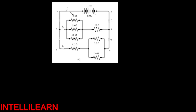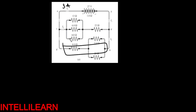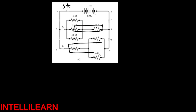So 27 divided by 9 is 3, meaning the current coming out is 3 Amperes. This is I1 = 3 Amperes, the current coming out of here. Now I have to divide that current between these two resistors - between this combination and this combination. That means I will use a current divider. So I need to know this total and this total.